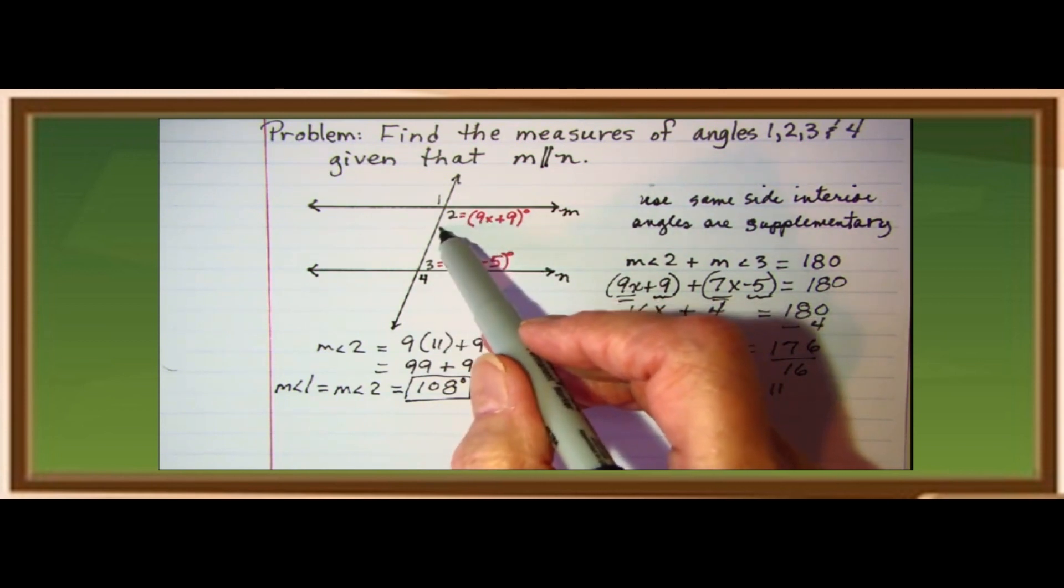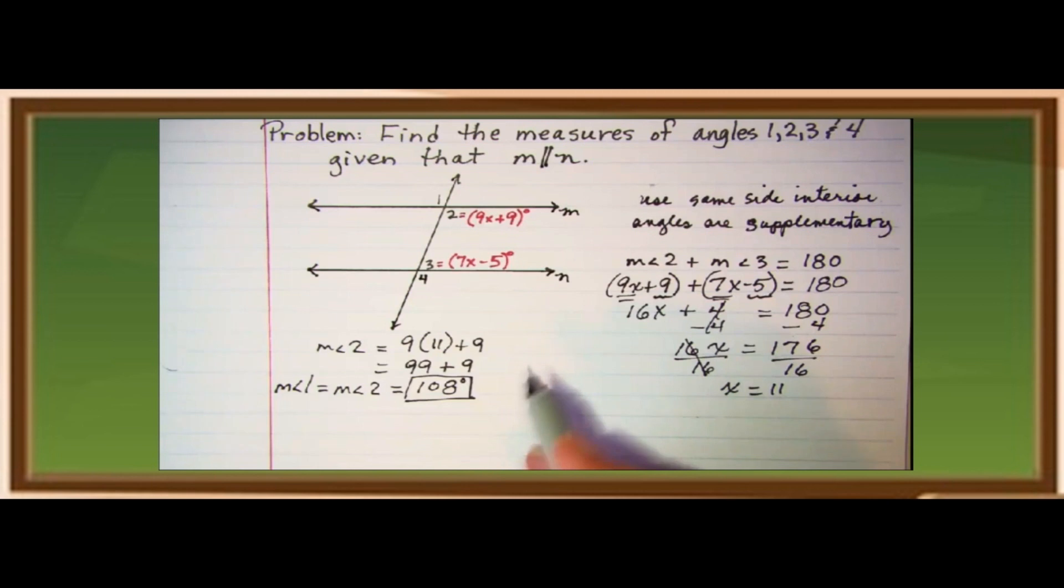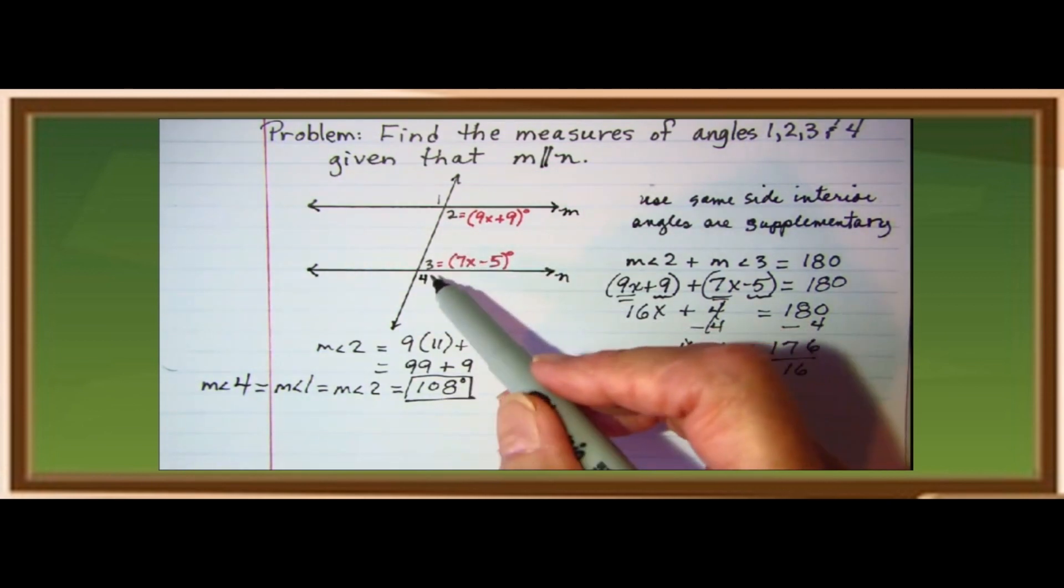Angles one and four are also alternate exterior angles. So, alternate exterior angles are also congruent. So, therefore, measure of angle four and angle one and measure of angle two is equal to 108.